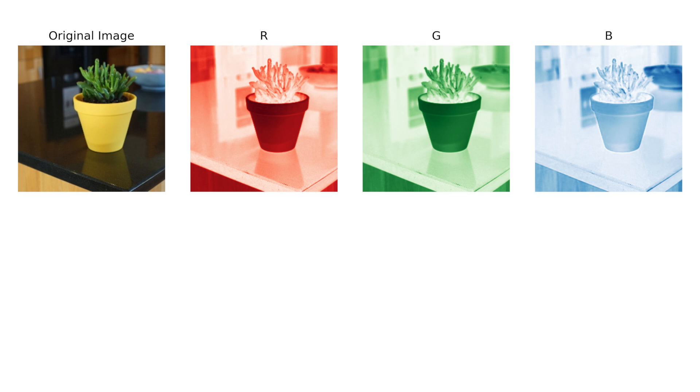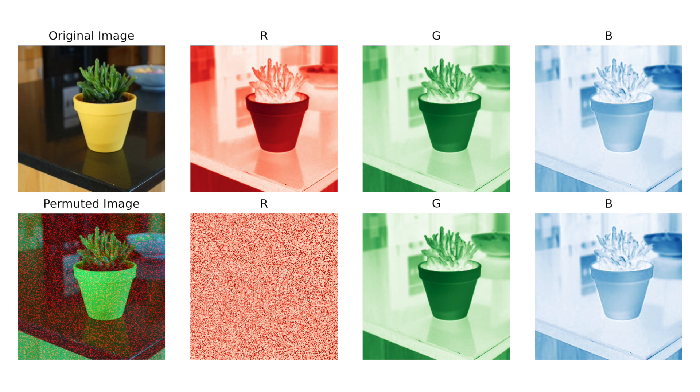For PCI we shuffle every pixel in a channel. Suppose we take an image and predict what type of plant it is. We then shuffle the red channel and make a prediction with this permuted image. If the predicted probabilities using the original image are significantly different from those using the permuted image, then this tells us that the model was using the red channel to make predictions for this instance. We can then repeat this process for all images and channels in our dataset. So unlike occlusion or SHAP, which can tell us which region or part of an image is important, PCI will tell us whether an entire channel is important.